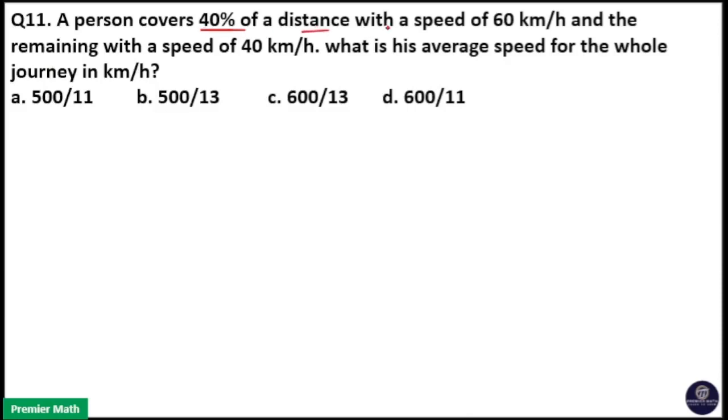Person covers 40 percentage of distance with a speed of 60 km per hour and the remaining with a speed of 40 km per hour. What is his average speed for whole journey in km per hour?